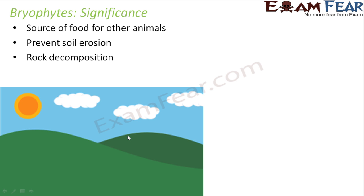Third, bryophytes help in rock decomposition. Many bryophytes like mosses actually grow on barren rocks which are otherwise of no use for cultivation. When bryophytes start growing on barren rocks, they gradually convert that barren area into dense wood. The decomposed rocks increase the fertility of the soil, making it suitable for the growth of higher plants. So initially you had barren rocks, but after bryophytes colonized them, the rocky area was converted into fertile land where more and more plants can grow.